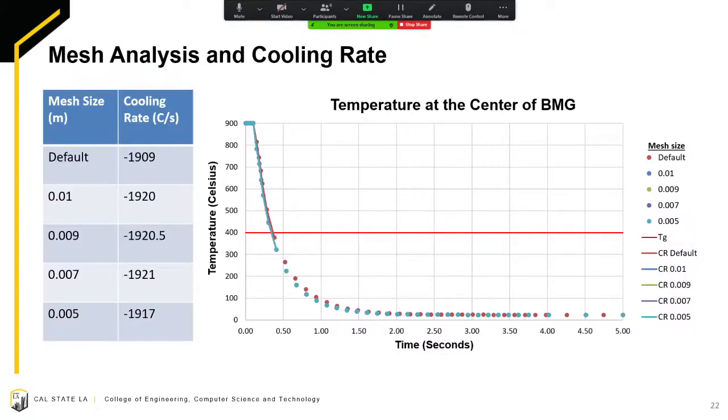This is our results from ANSYS. How we calculated the cooling rate was we took the slope from 900 degrees Celsius melting temperature to 400 degrees Celsius glass transition temperature. The results that yielded from this was a cooling rate of about 1900 degrees Celsius per second, which more than qualifies the vitrification critical cooling rate, which is 1.75 degrees Celsius per second.